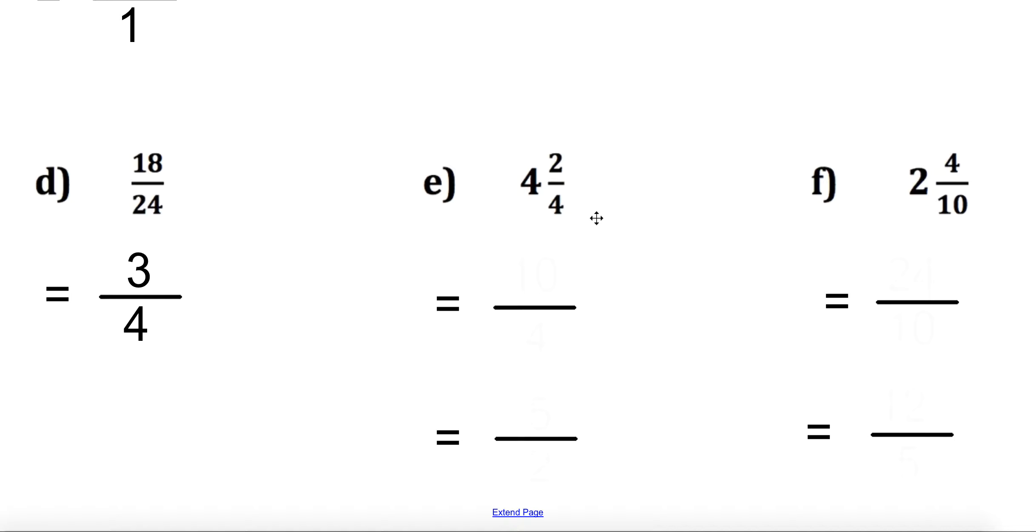Now, here we needed to change this to a mixed number first, so we get 10 over 4. 4 times 4 is 8, plus 2 is 10. Now, both of these numbers are divisible by 2, so I get 5 over 2.